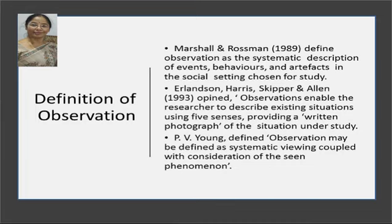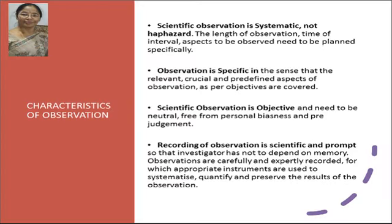There are some definitions of observation. From these definitions, let us see the characteristics of observation. Scientific observation is systematic. All types of casual observation are not research observation. It is systematic in the sense that it is objective-oriented and predefined — the focal points to be observed are predefined, and the relevant and crucial activities or aspects are predefined beforehand.